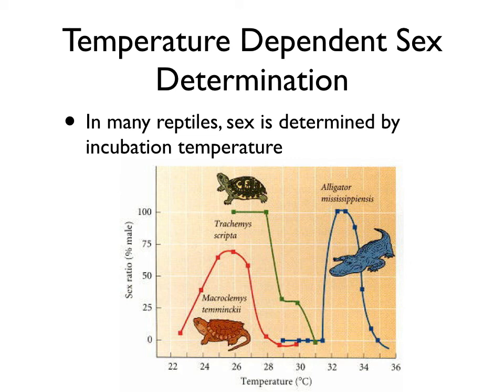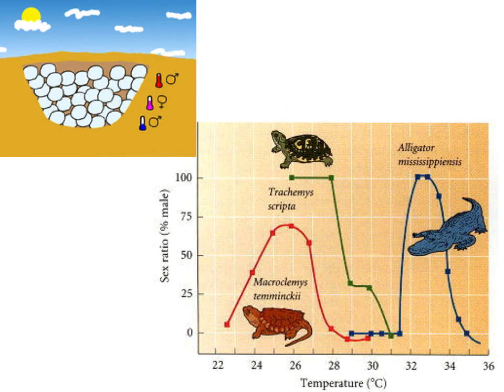Consider that these reptiles bury their eggs in holes rather than building nests — the eggs are exposed to a gradient of temperatures depending on their depth. This means you can end up with a fairly balanced sex ratio within a nest. However, particularly hot or cold years can dramatically shift the frequency of males and females within the population.